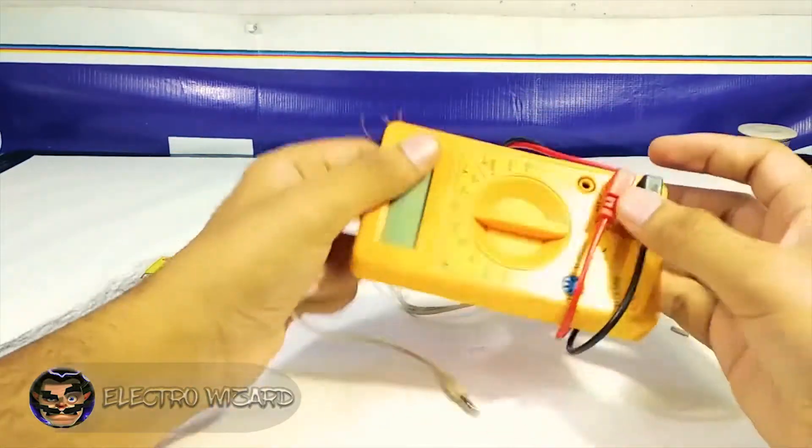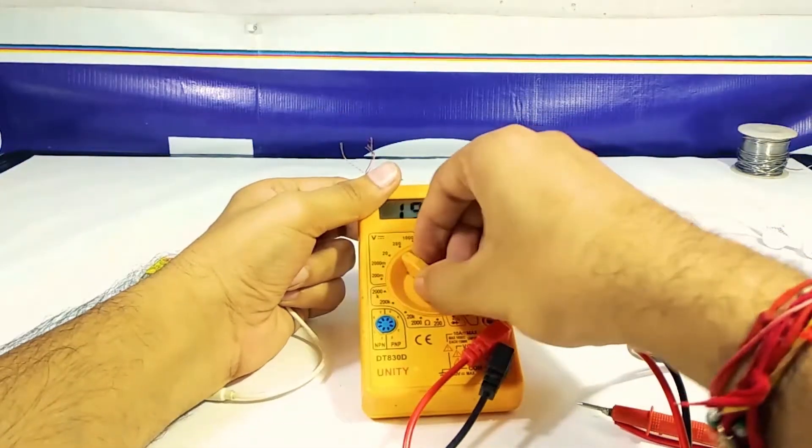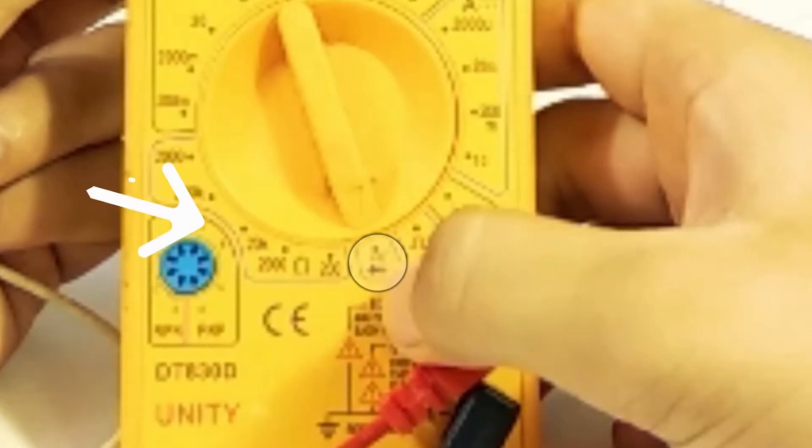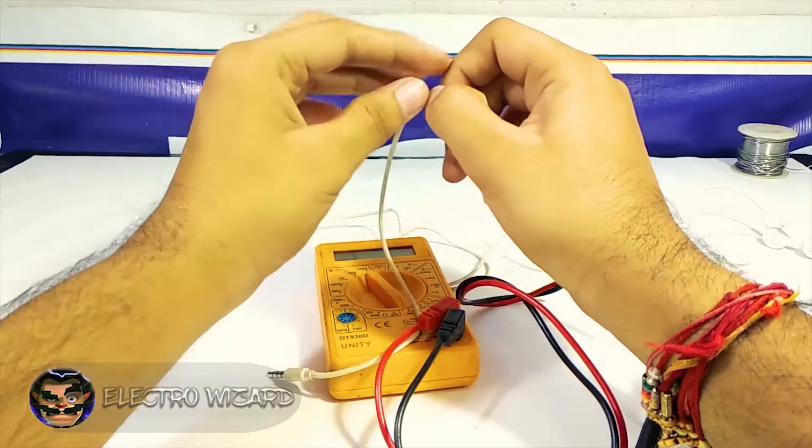For continuity testing, use a multimeter or any continuity tester. If you're using a multimeter, then you need to select the continuity point which is shown as a buzzer. When the wire is continuous, the buzzer in the multimeter beeps.